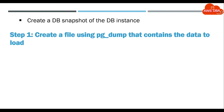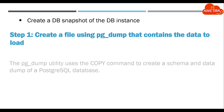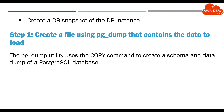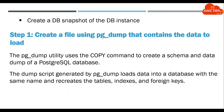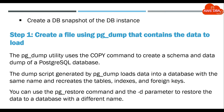Step 1: Create a file using pg_dump that contains the data to load. The pg_dump utility uses the COPY command to create a schema and data dump of a PostgreSQL database. The dump script generated by pg_dump loads data into a database with the same name and recreates the tables, indexes, and foreign keys. You can use the pg_restore command and the -d parameter to restore the data to a database with a different name.